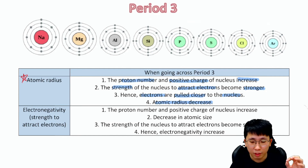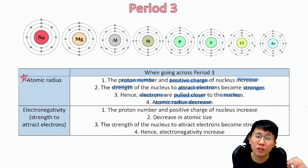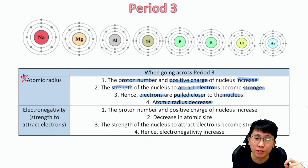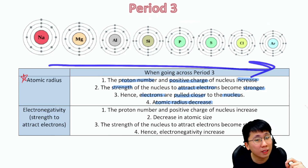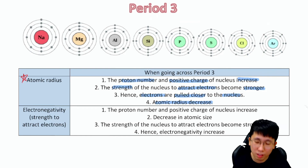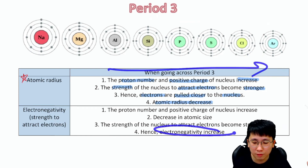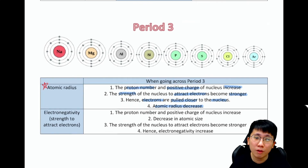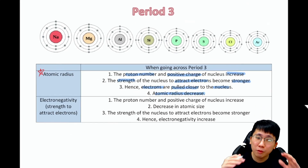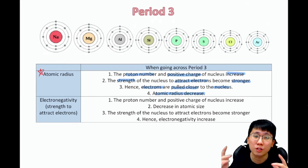Electronegativity is very similar — it's about the strength to attract electrons. Going to the right across the period means more protons and a stronger force to attract electrons, so electronegativity increases going across Period 3.